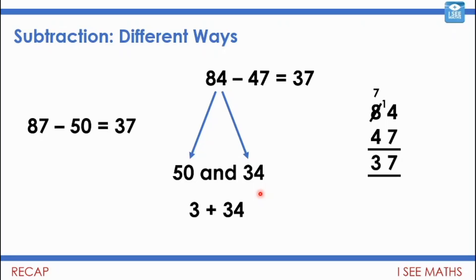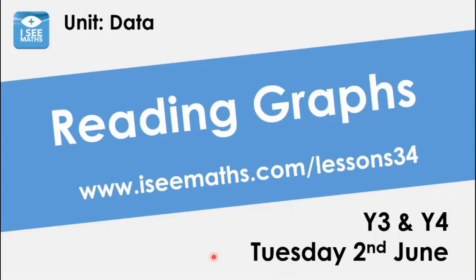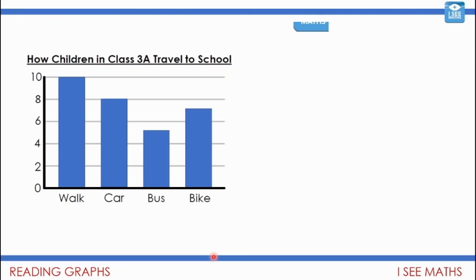Yesterday we looked at different kinds of graphs and why we need them. Today we're doing something slightly different — reading information from graphs. For some graphs it's just taking one reading, and for some we really have to think deeply about the information required to answer a specific question. Let's have a look at this graph: how children in class 3A travel to school.